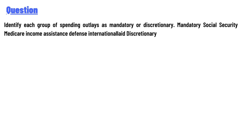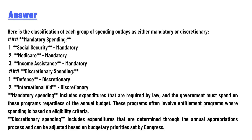The categories listed are: mandatory — Social Security, Medicare, income assistance; and discretionary — defense, international aid. Here is the classification of each group of spending as either mandatory or discretionary.